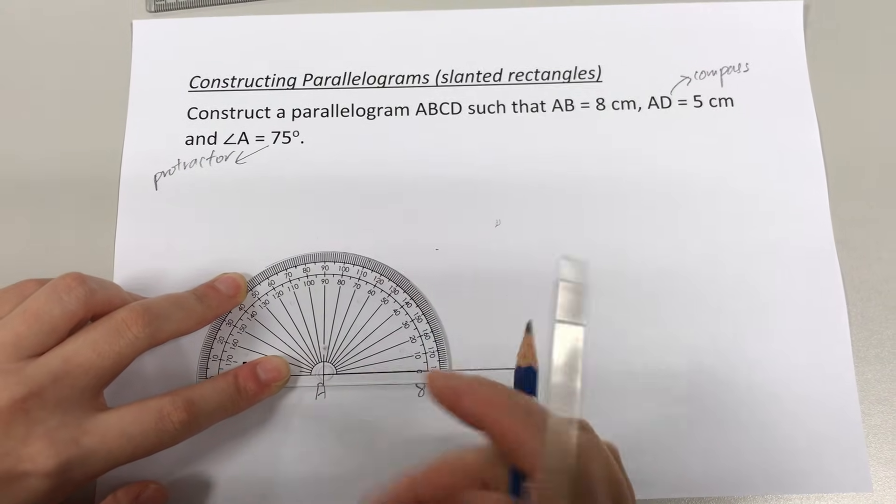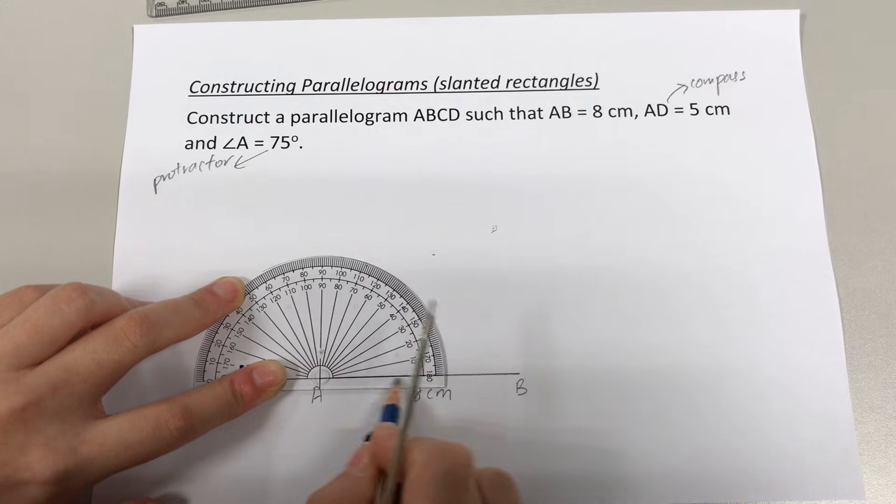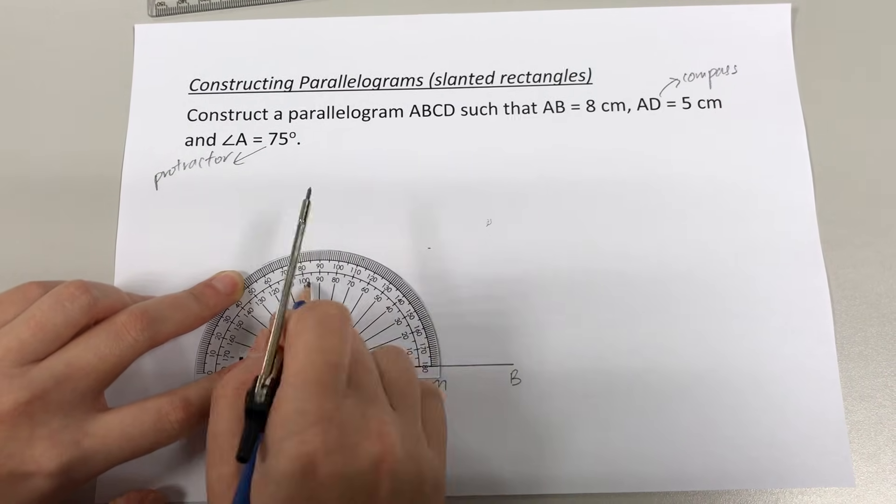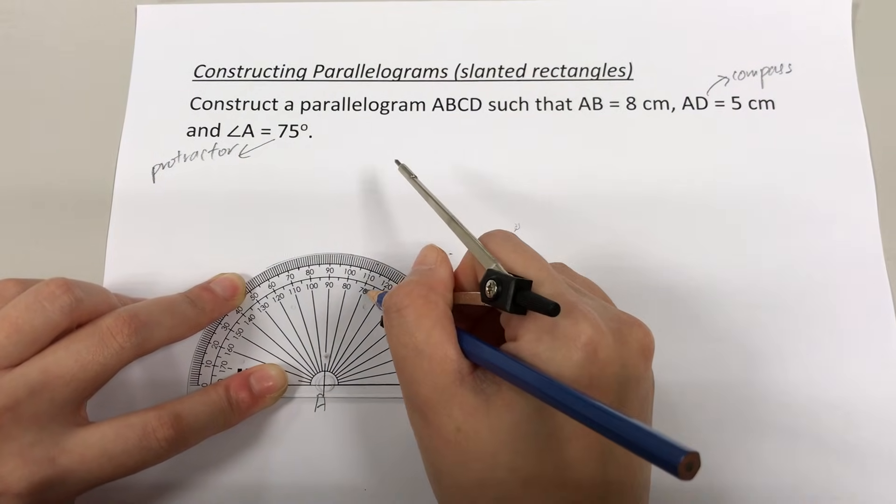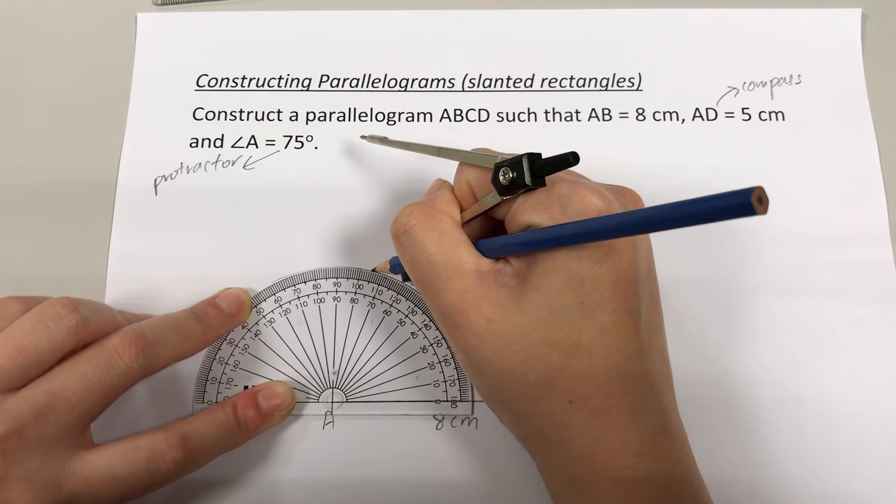Be sure to read the correct scale. I have to read the scale whereby this starting line, the baseline AB, points to 0. So I'm going to follow the set of inner numbers. I'm going to follow this set of numbers to go to 75, which is right in the middle of 70 and 80.